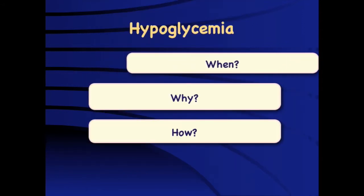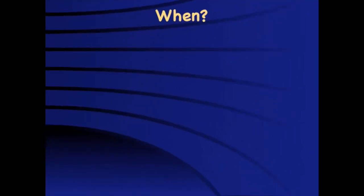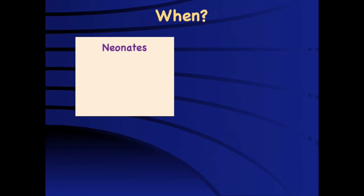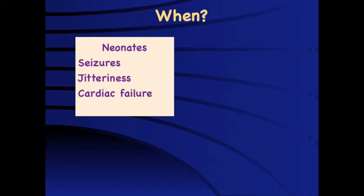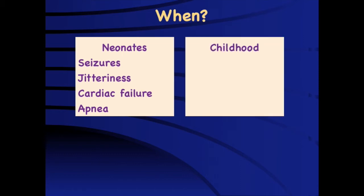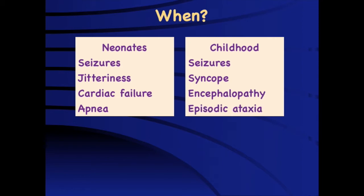The first question is when do we need to suspect hypoglycemia. We need to be very cautious about hypoglycemia in the neonatal period. Any child in the neonatal period who has seizures, jitteriness, or cardiac failure needs evaluation, as cardiac failure is a common presentation of both hypoglycemia and hypocalcemia. Apnea should also prompt measurement of blood sugar levels. In older children, symptoms may be more bizarre; however, seizures — particularly early morning seizures — are common, along with syncope, encephalopathy, and episodic ataxia.